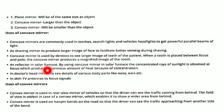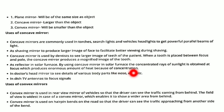The next use is as a reflector in solar furnaces. By using a concave mirror in a solar furnace, the concentrated rays of sunlight are obtained at the focus, which produces an enormous amount of heat because of concentration. The concave mirror converges light rays to a single point, and this principle is used in solar furnaces.